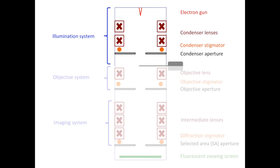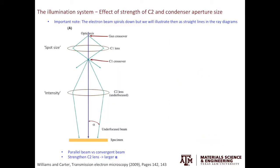We will look at how the beam characteristics will be affected by changing the parameters in those components. We have already discussed the electron sources and the condenser stigmator in the previous videos. Here, we will focus on the C1 lens, C2 lens, and the size of the condenser aperture. The C1 lens controls the spot size, and the C2 lens controls the intensity.